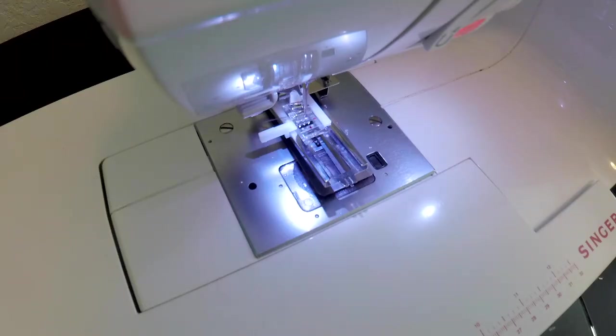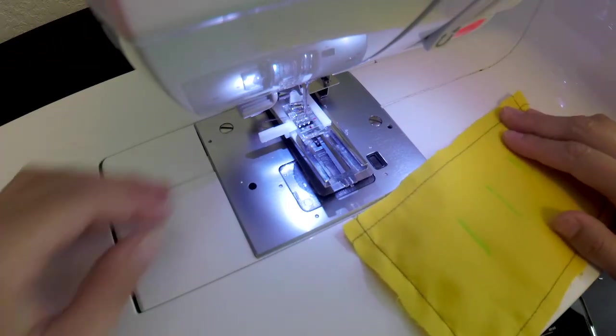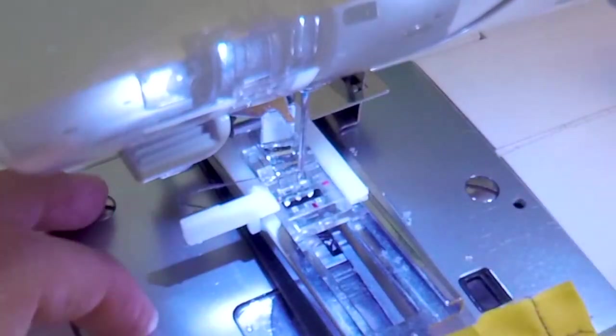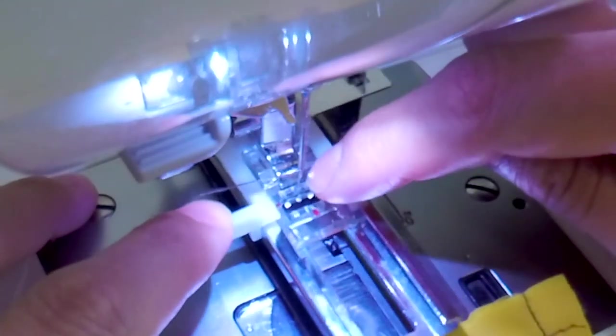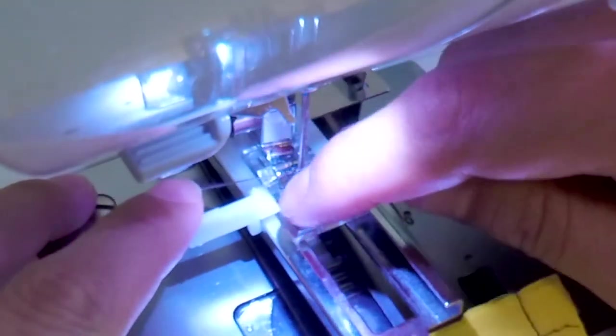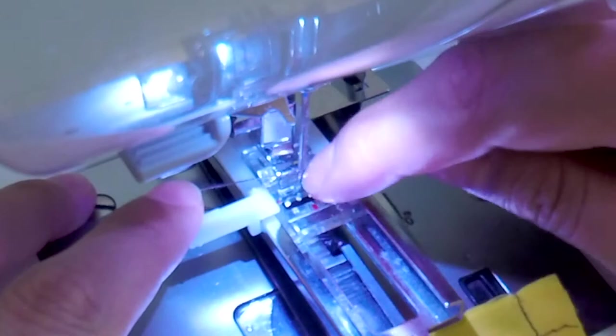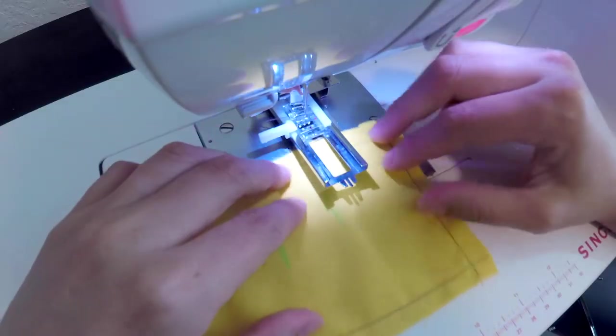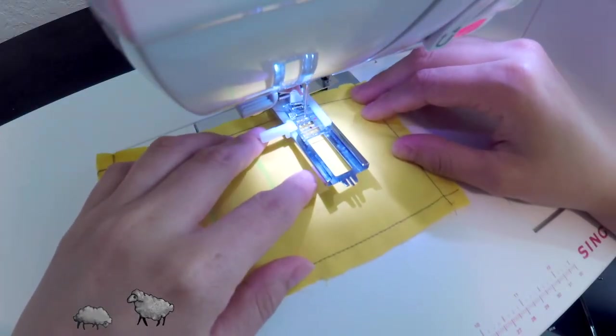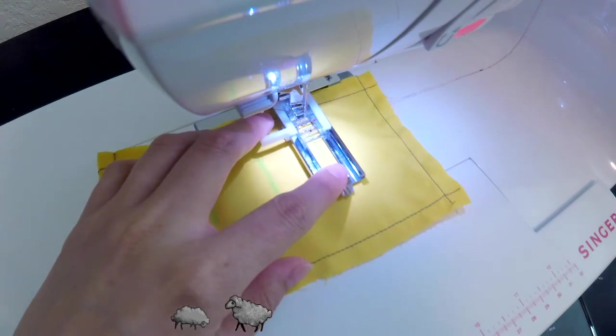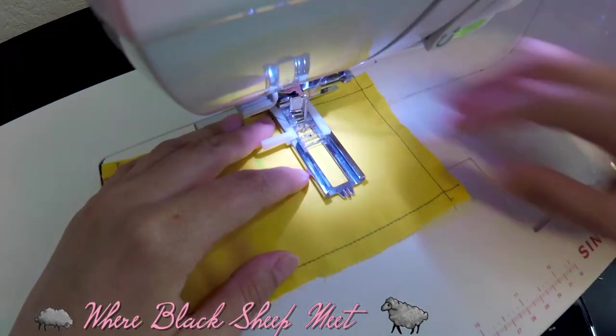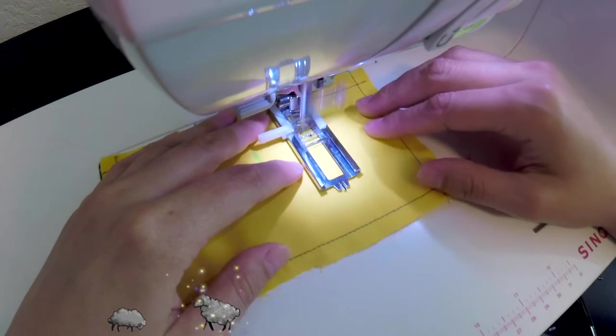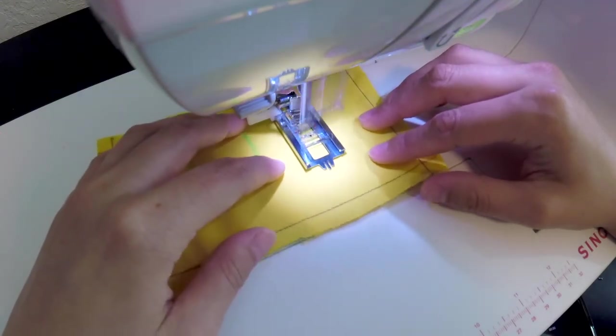Now I'm good to go and we can start stitching our buttonholes. On the top of my foot here I have a little hole that's marked with red lines, and I want to line up the first point of my mark in between these lines. I'm just going to take a second to line it up, and then you lower your presser foot.